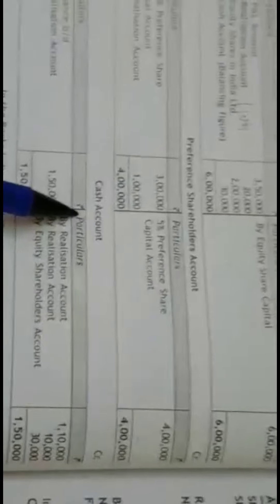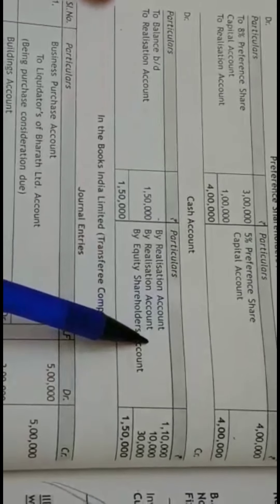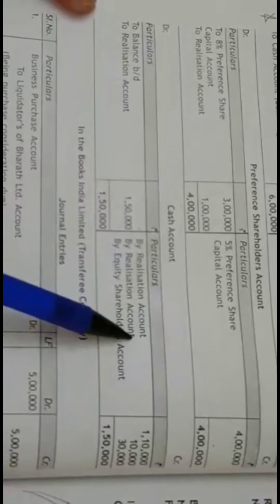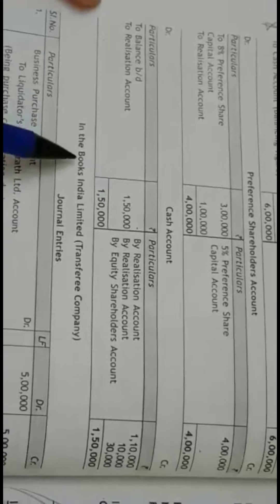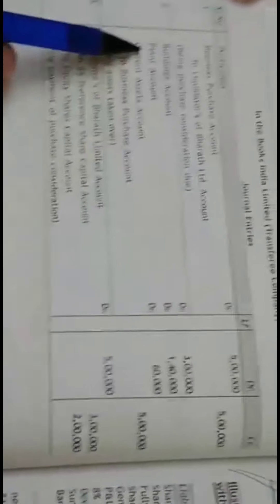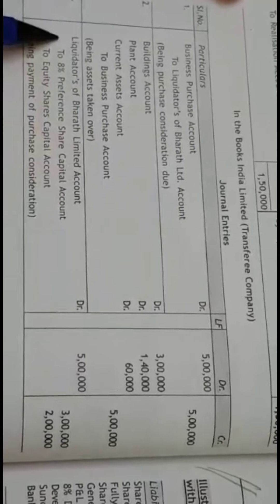Rest of the ledger accounts like realization account, purchasing company account, equity shareholders account, preference shareholders account and cash account - everything remains the same. I am going to send you the photocopy. You just solve the problem and check it out with the photocopy. I am not going to discuss in detail because this is a very simple problem.